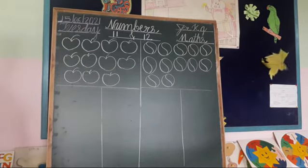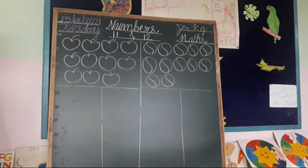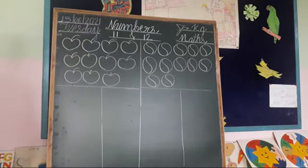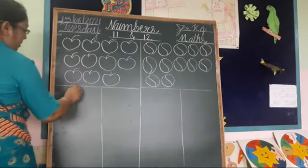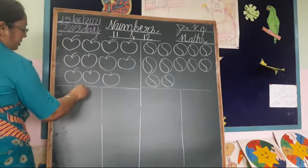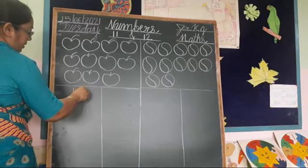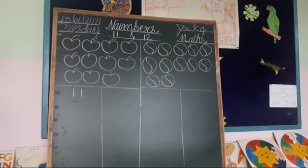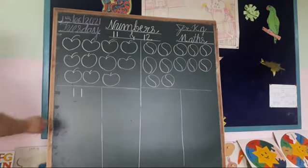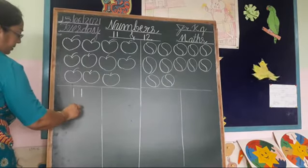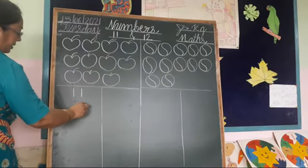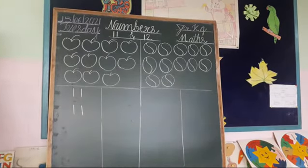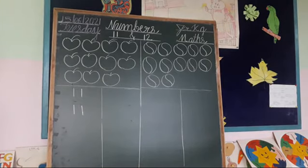So now write here number 11. First we have 1, 1 — 11. Standing line and again standing line: 1, 1, 11. Okay, 1, 1, 11.